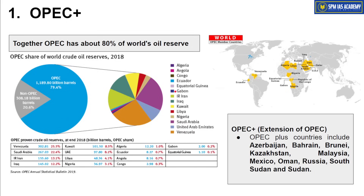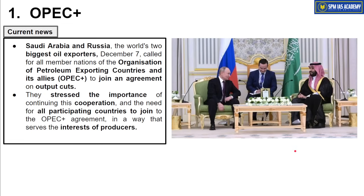After OPEC, the concept of OPEC Plus was introduced — an extension of OPEC where more oil and natural gas rich countries also joined. These include Azerbaijan, Bahrain, Brunei, Kazakhstan, Malaysia, Mexico, Oman, Russia, South Sudan, and Sudan. They are part of OPEC Plus, which is the extension of OPEC.